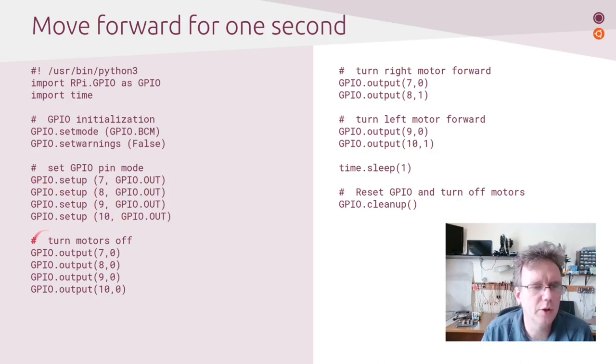Then we're going to set up our pins in output mode. So pins 7, 8, 9, and 10 are hardwired into that controller board. And we need to configure them as output pins. So now after they're configured, I'm going to turn them off just by setting the value on each one to zero. Then I'm going to turn the right motor forward by turning pin 7 off. It already is. And then turning pin 8 on. So that just sends the one out there. And then at the same time, I'm going to turn my left motor forward. So pin 9 stays low, pin 10 goes high. I'm going to sleep for a second. And then I'm going to clean up, which will reset and turn all the motors to zero.